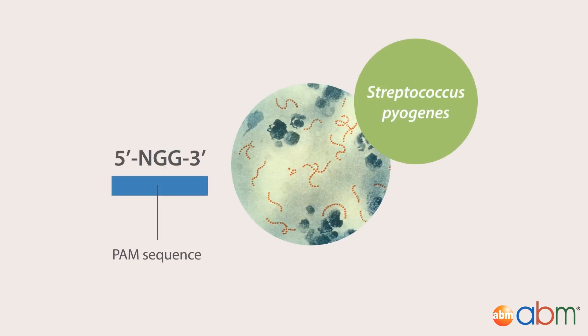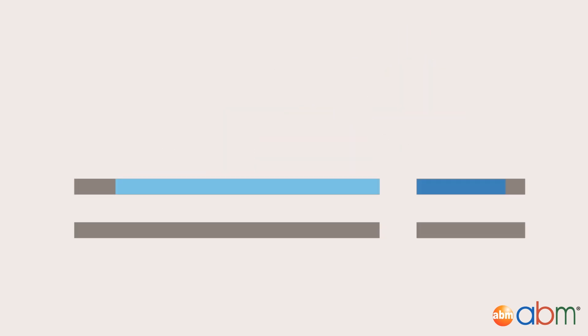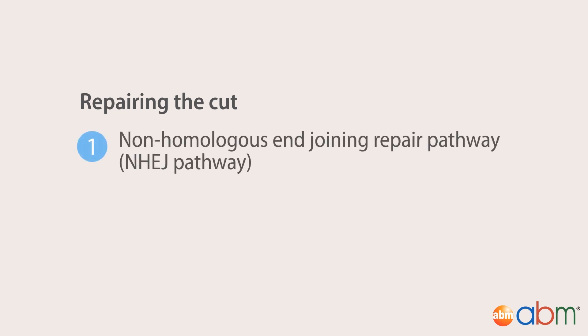Cas9 makes a double-stranded cut directly upstream of a protospacer adjacent motif, or PAM sequence. This sequence is NGG for the Cas9 protein of Streptococcus pyogenes. After the double-stranded cut is made, the cell can repair the cut using either the non-homologous end joining repair pathway.